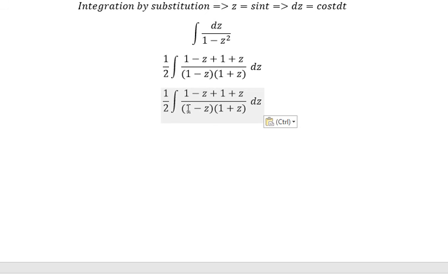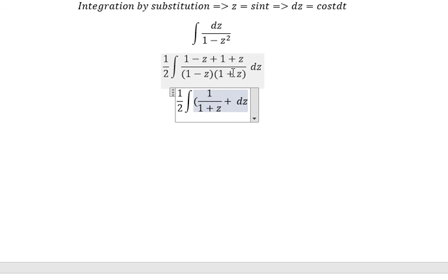1 minus z divided by 1 minus z, we got about 1 over 1 plus z. 1 plus z divided by 1 plus z, we got about 1 over 1 minus z.